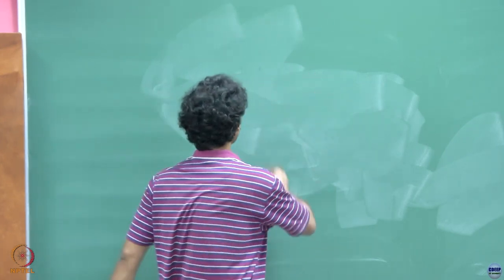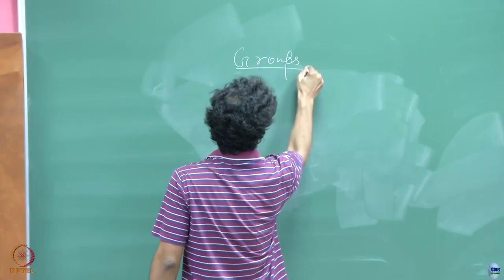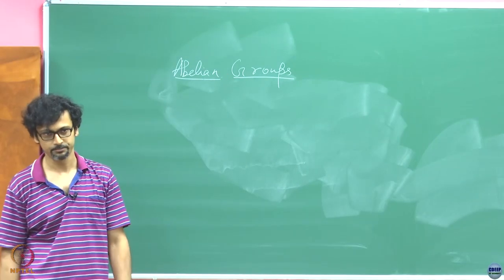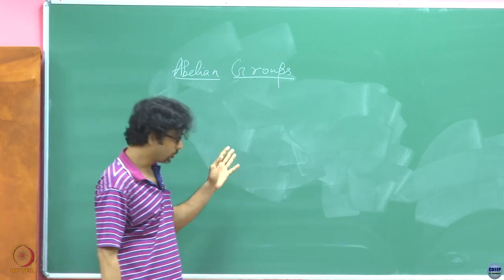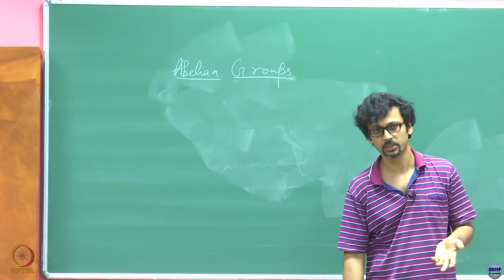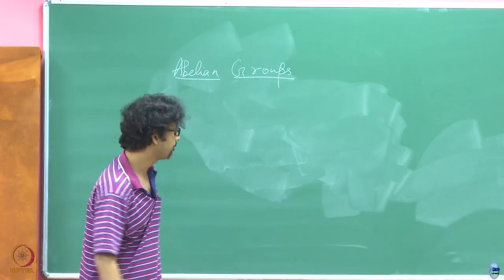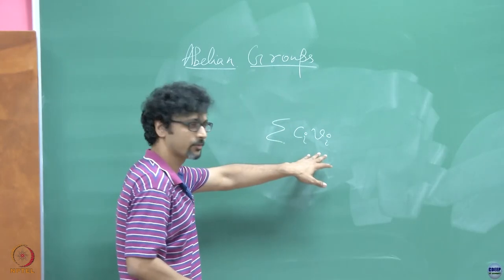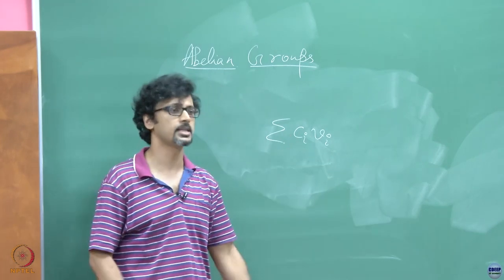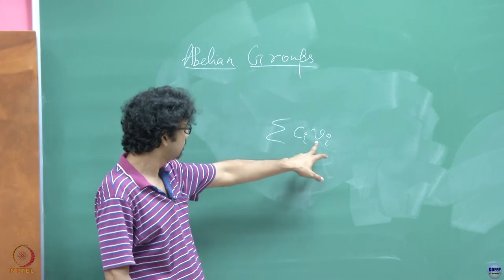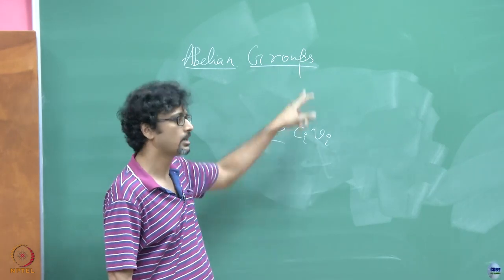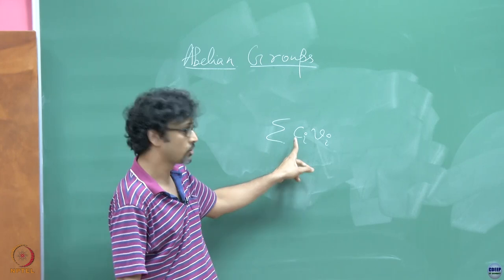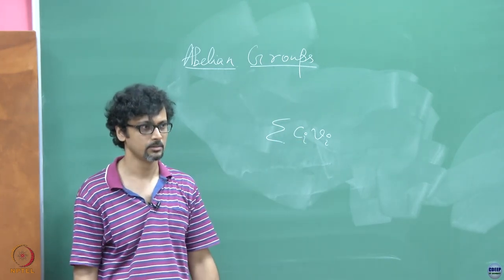First we understood groups, and then with the additional property of commutativity we get abelian groups. Now we are going to look at something more — something beyond just groups. If you notice the way I wrote that solution, it was something like summation ci*vi. So there are basically two operations: addition of certain n-tuples of numbers, and scaling of those n-tuples by some scalars.